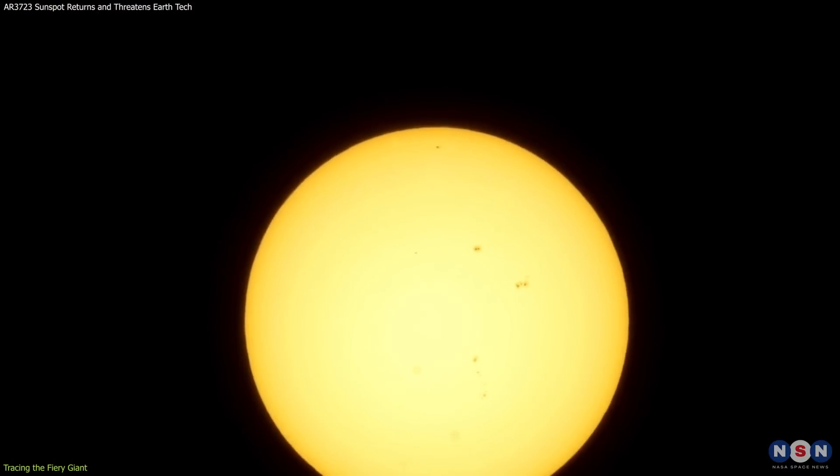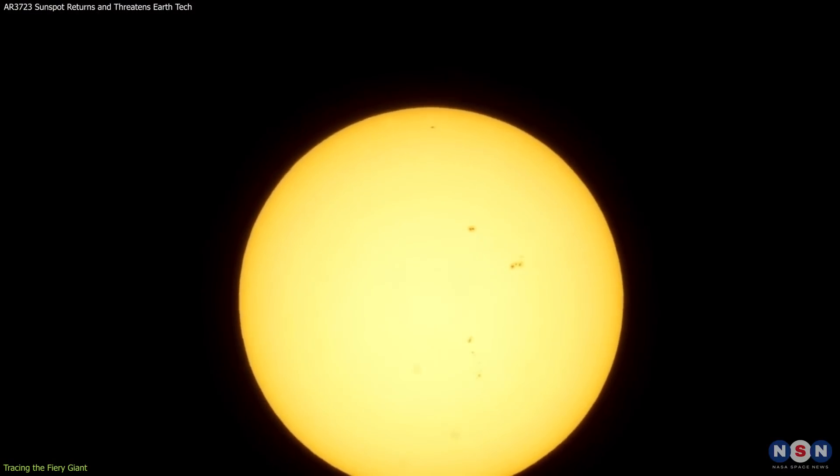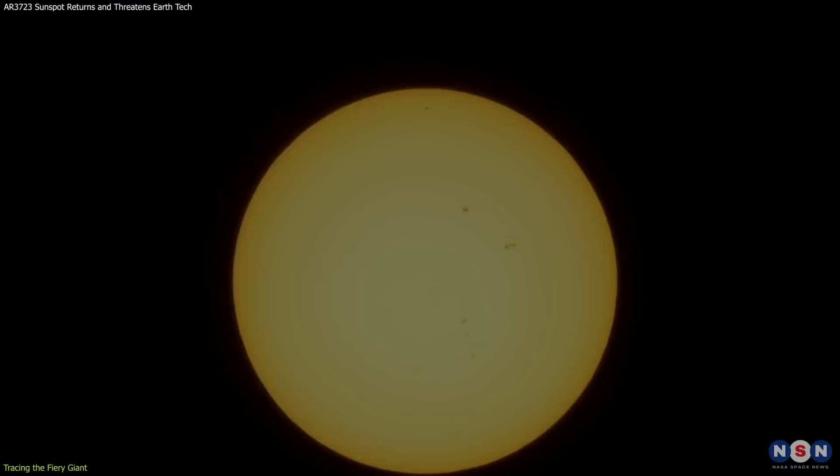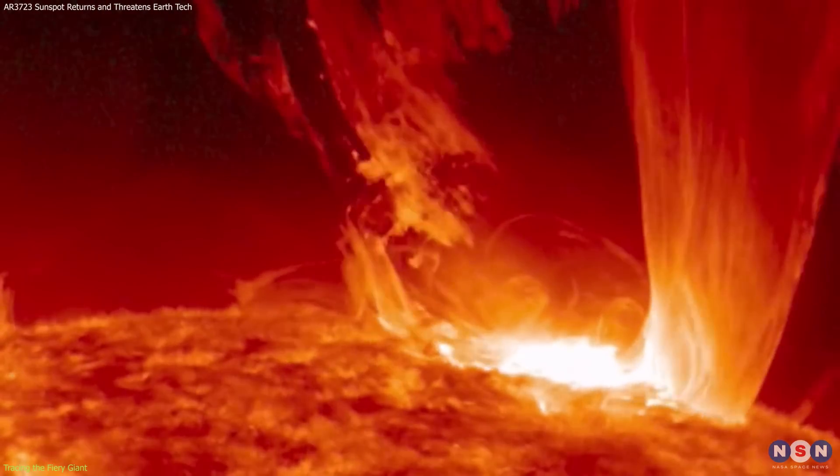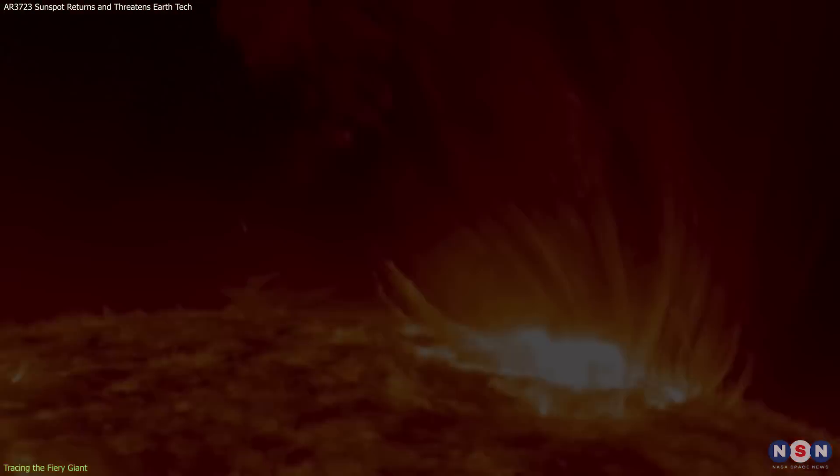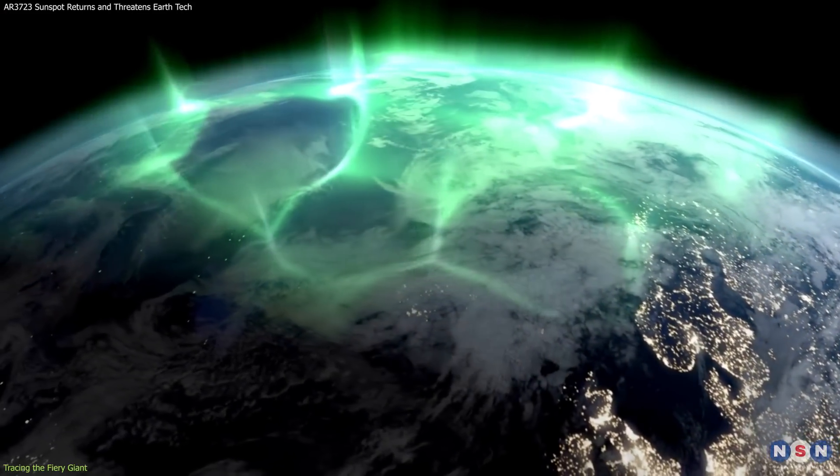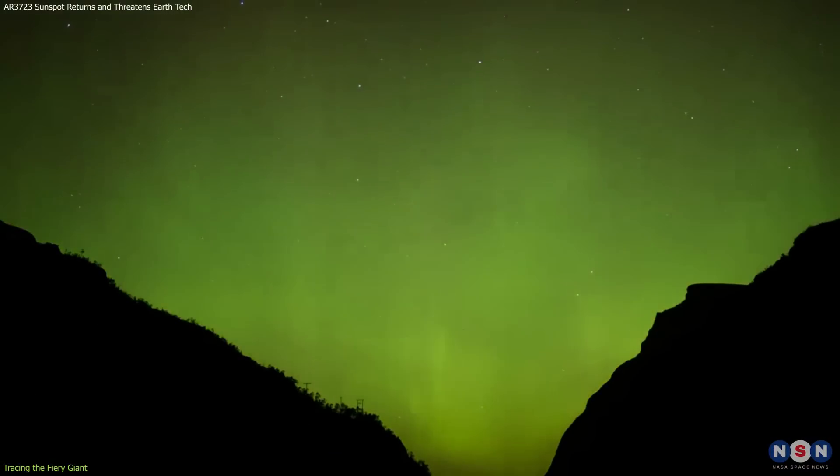The re-emerging sunspot has been under scrutiny for its role in previous solar events. During its earlier appearances, it unleashed several powerful solar flares and coronal mass ejections that interacted with Earth's magnetosphere, leading to vivid auroras and disruptions.